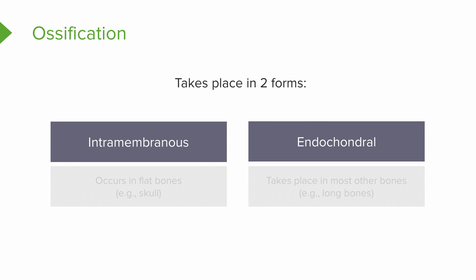So there are two forms of bone formation or ossification: intramembranous ossification and endochondral ossification.